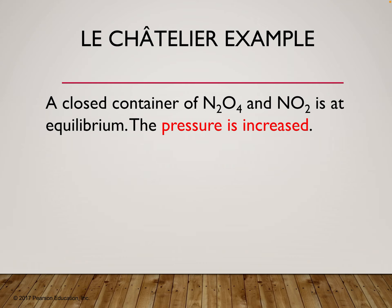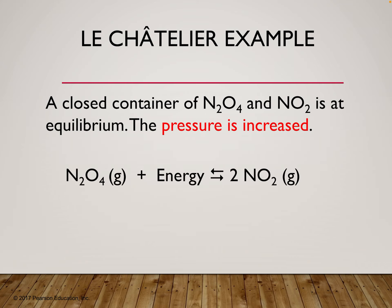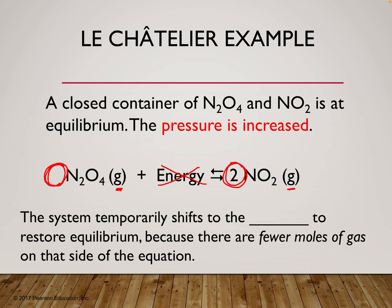Let's look at an example: a closed container of dinitrogen tetroxide and nitrogen dioxide at equilibrium, and we increase the pressure. When increasing or decreasing pressure, we look at the coefficients in front of the gases. Both species here are gases. There is one gaseous mole on the reactant side and two on the product side. When we increase the pressure — typically by decreasing volume, giving less room for gas — we shift to the side with fewer gas molecules: shift left.